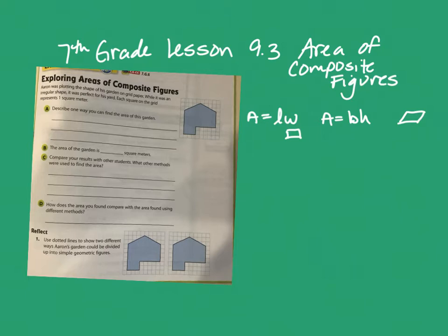Every triangle is some form of a cut-in-half rectangle. The formula for a triangle is base times height divided by two, because it's half of a rectangle. You can add a mirrored version onto a triangle to get a parallelogram, so you just take the parallelogram formula and cut it in half.